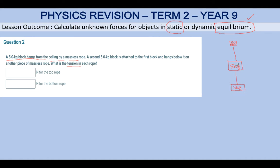So there's one 5 kg block, another 5 kg block below it, one attached to the other. They ask you: what is the tension in each rope? First of all, what is tension?